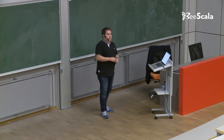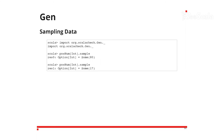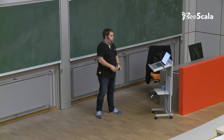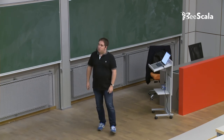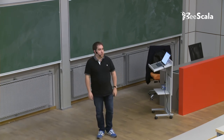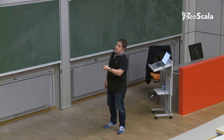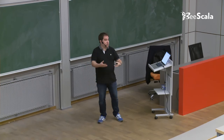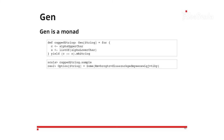If we've got some generators, we can pop onto the REPL and have a quick look at how they work. They come with a sample method that produces options of the values — if for some reason the generator cannot produce a value, it will produce None. Gen is a monad, so we can really use this with for-comprehensions. We can create a brand new generator from ones that already exist — for example, pick an uppercase letter, then have a list of lowercase letters, and create a generator that puts those together, like a name generator where the first name is always capitalized.